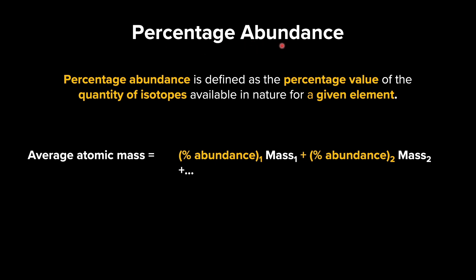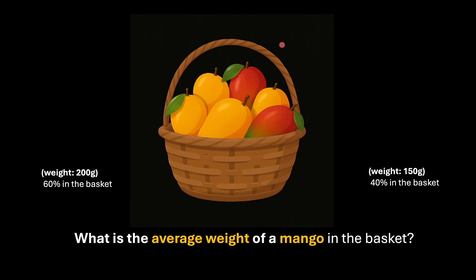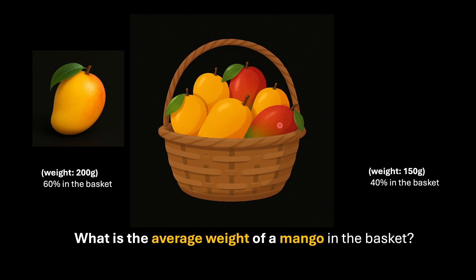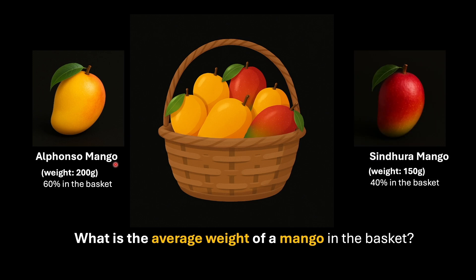Before understanding percentage abundance from a chemistry perspective, let's use an analogy with mangoes. The question is: what is the average weight of a mango in the basket? We have two types of mangoes — a yellow one called Alphonso mango, which weighs 200 grams, and 60% of the basket is filled with Alphonso mangoes. The other type is Sindura mango, which is red, weighs 150 grams, and makes up 40% of the basket.